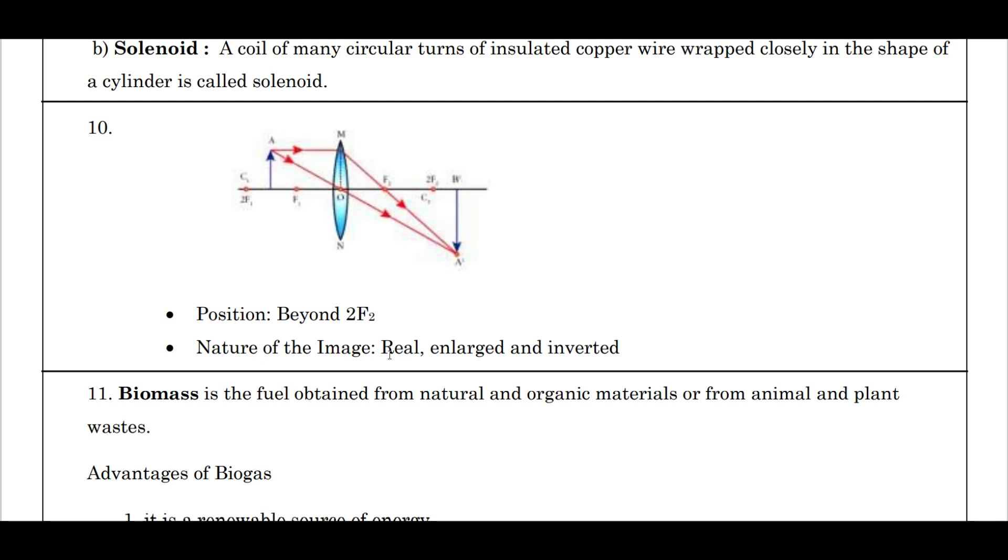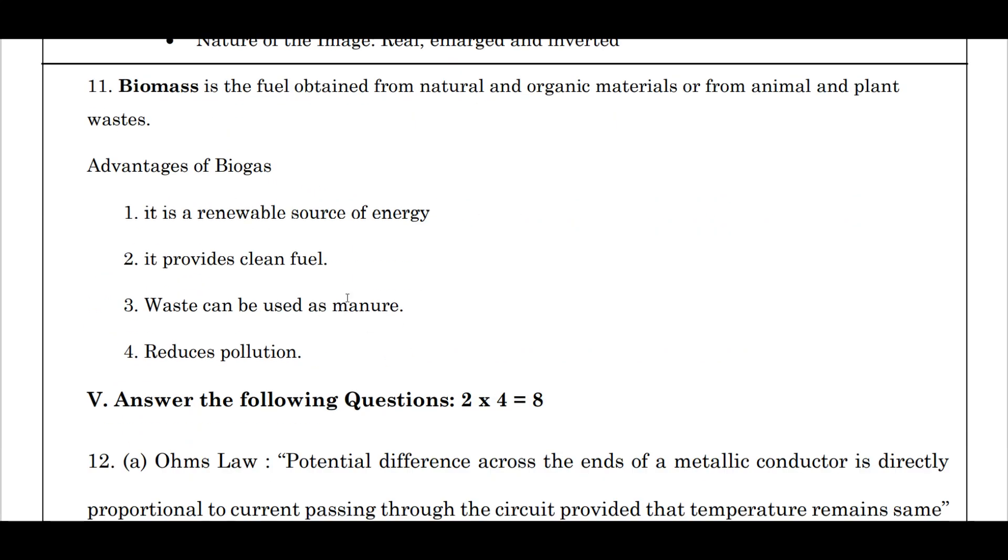What is biomass? Next question, 11th question: biomass is a fuel obtained from natural and organic materials, or from the animal and plant waste by degradation of natural and organic materials. Advantage of biogas is what? It is a renewable source of energy. It provides clean fuel. Waste can be used as manure and it reduces the pollution.